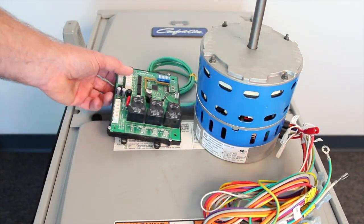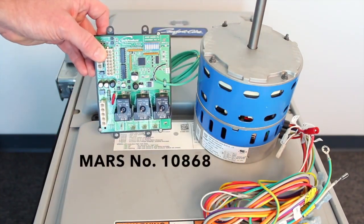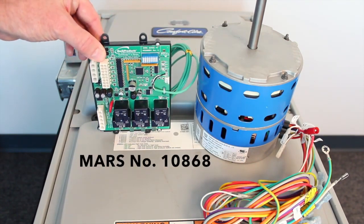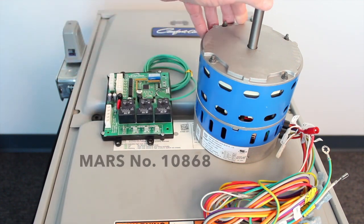This is a Comfort Air variable speed furnace with a Gentek 2.3 variable speed ECM motor. I'm going to show you how to change that motor with an Azure QuickSwap board and an Azure motor.